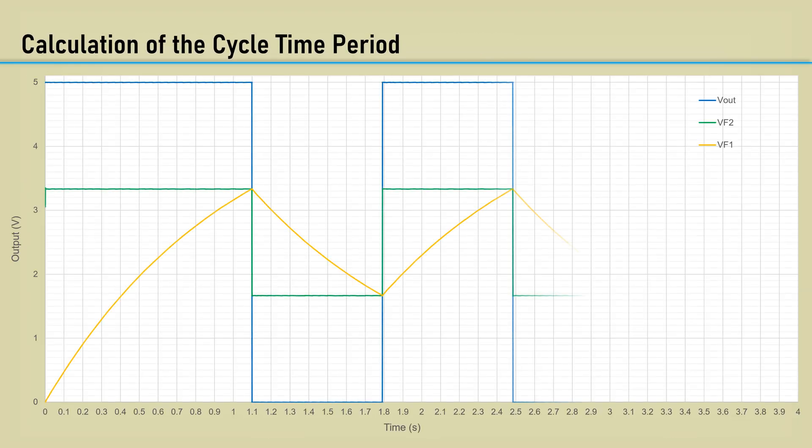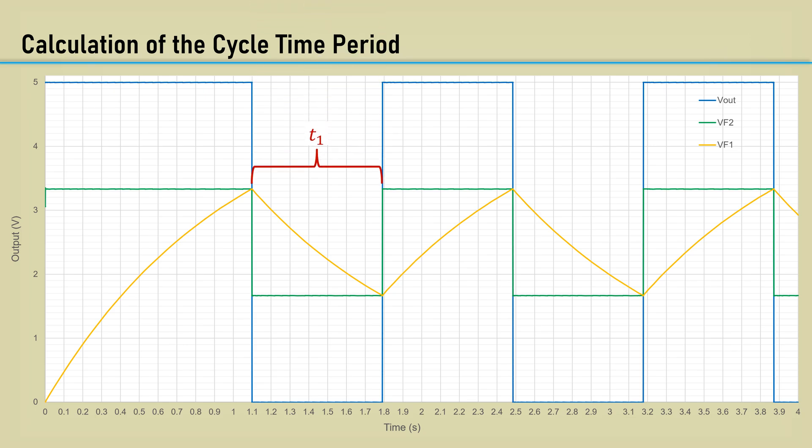To calculate the cycle time period after the initial charging of the capacitor, the discharge time is T1, and the recharge time is T2. The period, then, is T1 plus T2.